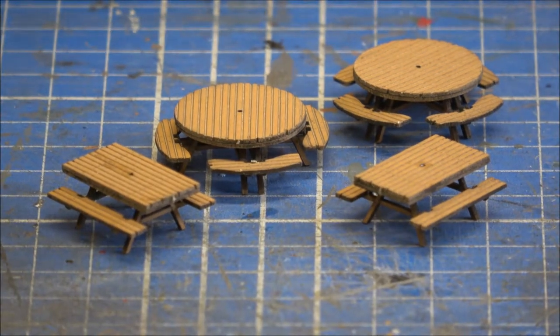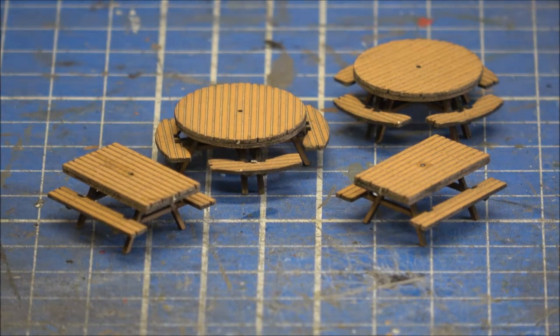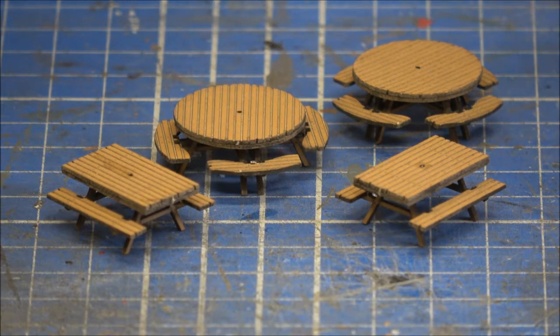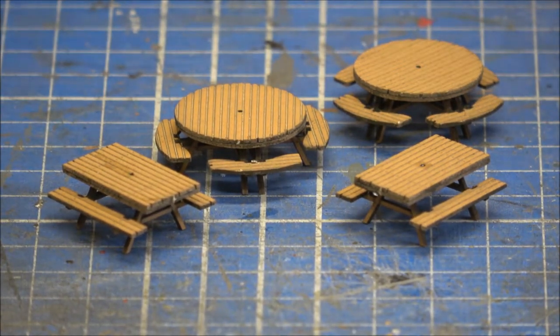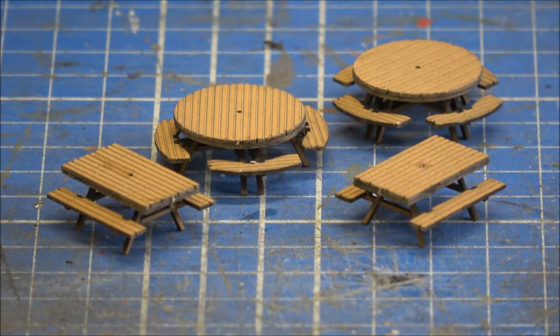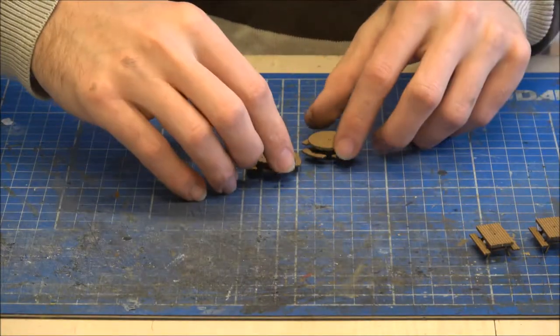So as you can see, we've now got four benches all ready made up. And it's not taking very long to do at all, which is a good thing. So the next thing we can move on to will be the umbrellas. So I'm just going to zoom the camera out just so we can see a little bit better. And we'll get on with those.